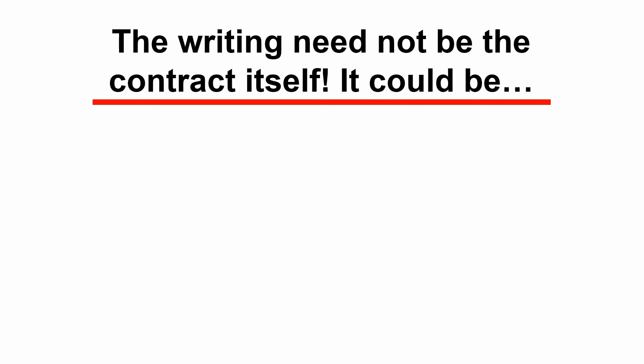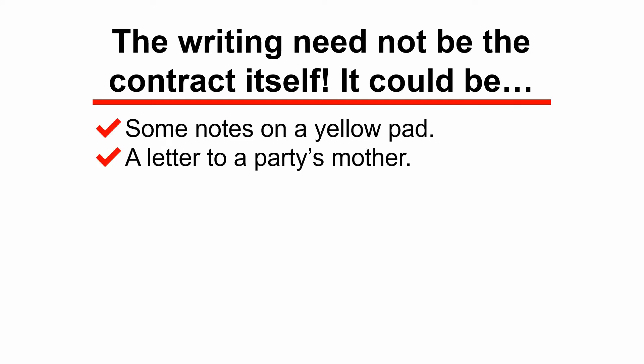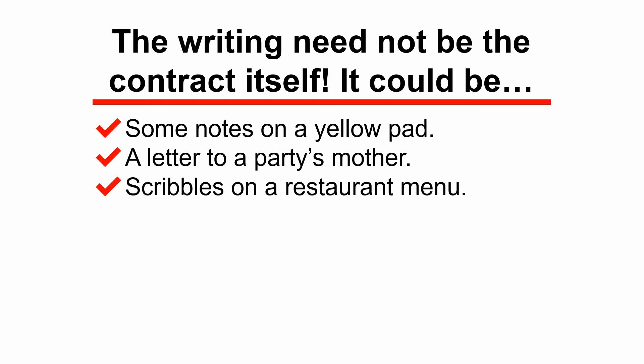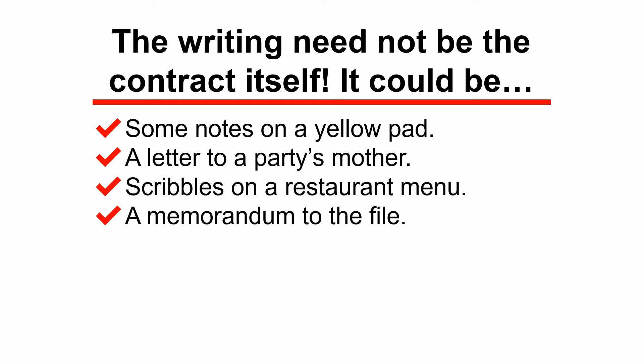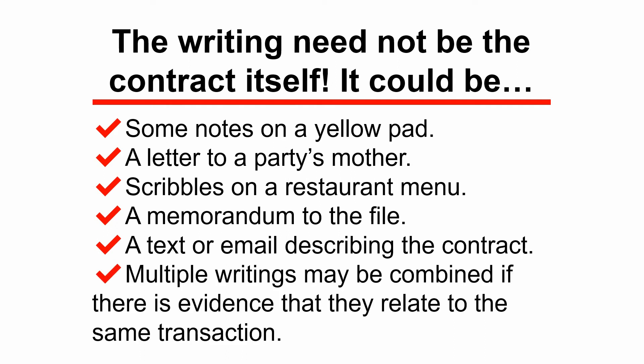The writing doesn't necessarily have to be the contract itself. It could be some notes on a yellow pad, a letter to somebody's mother, scribbles on a restaurant menu, a memorandum written to the file, or a text or email describing the contract. And as we've already said, multiple writings may be combined as long as there's evidence that they relate to the same transaction.